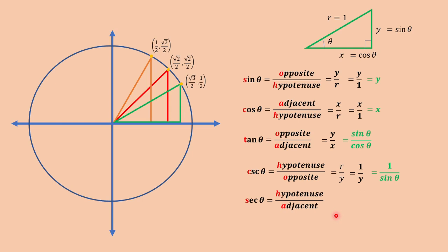For secant theta, we have hypotenuse over the adjacent. So this is r over x. And we can have 1 over x. We can also write this as secant theta is equal to 1 over cosine theta because x is equal to cosine theta.